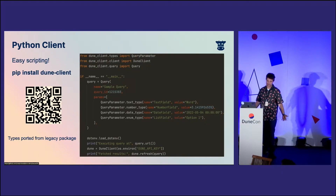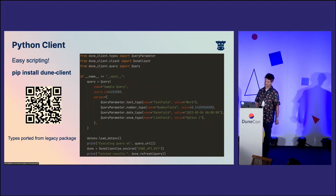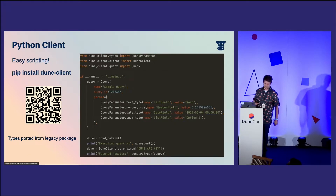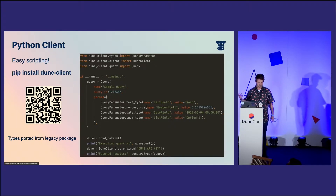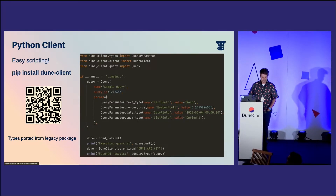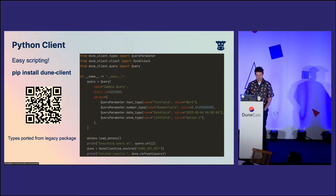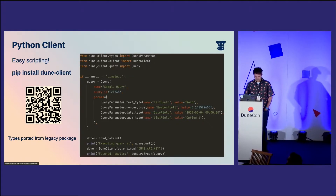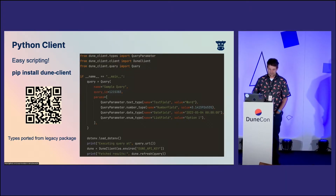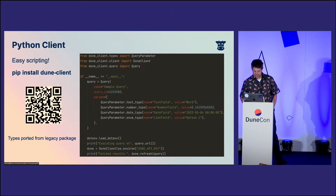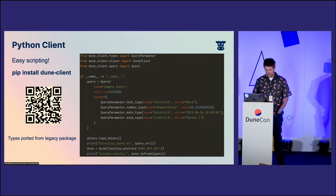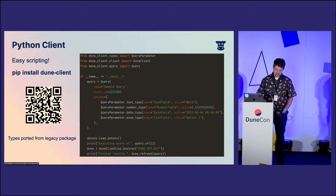The Python client — there's not that much to say, because it is super easy to use. pip install dune-client. This is just a sample script that you can use to fetch some data from a query that you have already. You import a query — it's all fully typed as well, the types are there. Query parameters, the dune client, and a query struct. Give it a query ID and whatever parameters you want. This is an example of all four different parameter fields: a text field, a number field, a date field, and an enum field. Put whatever values you want.